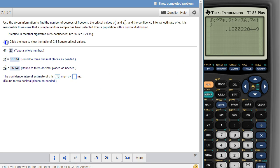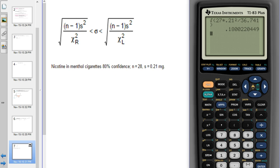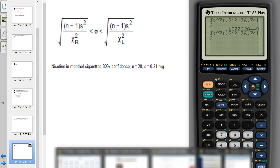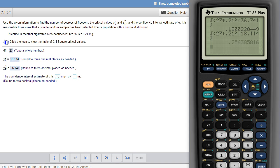And then to get my upper number, notice over here the only thing that changes is we divide by the left chi-square rather than the right. So I'm going to bring back the last thing I just did, second enter, and then I'm just going to change that last number from 36 to the other number, 18.114. And then I get this number 0.256, so to two decimal places is 0.26.